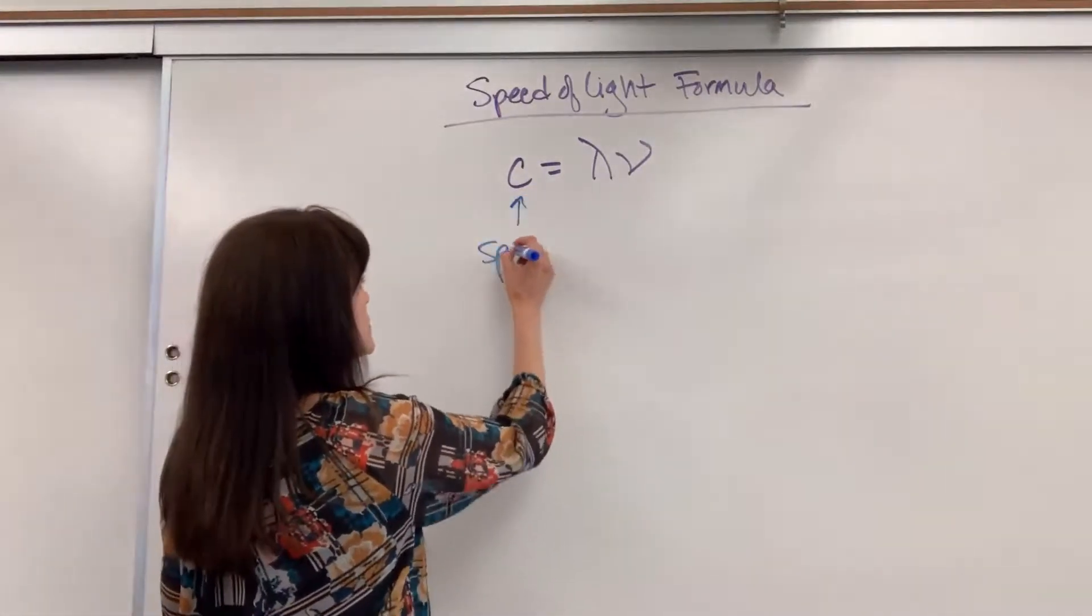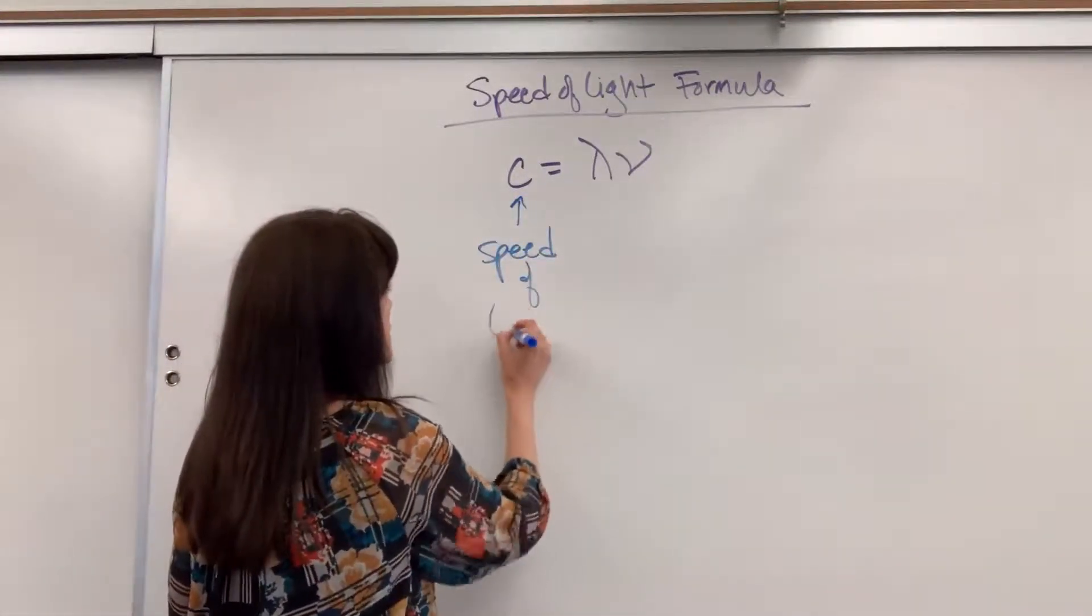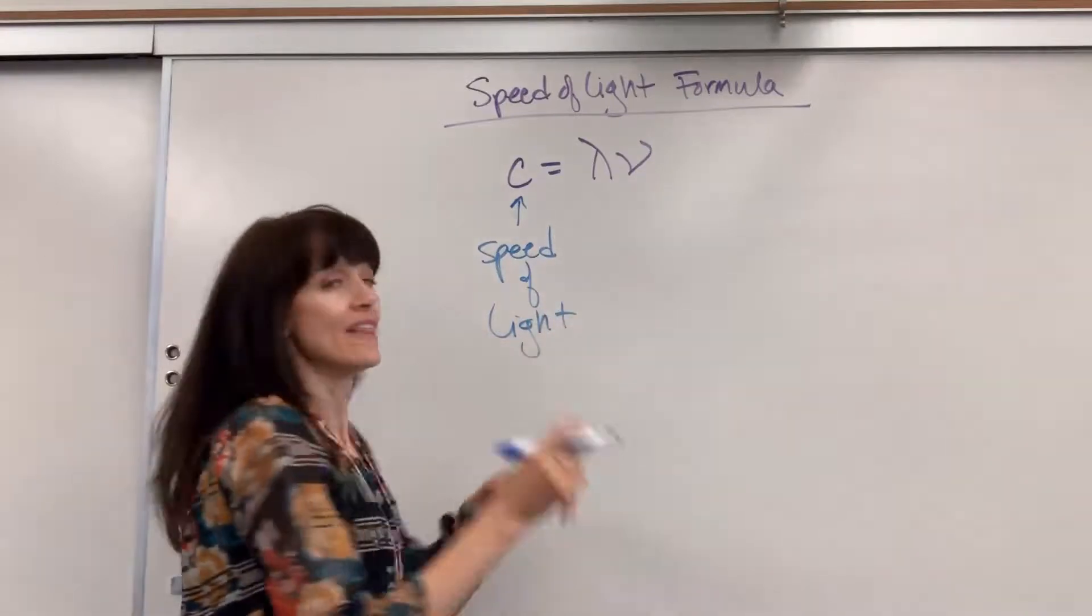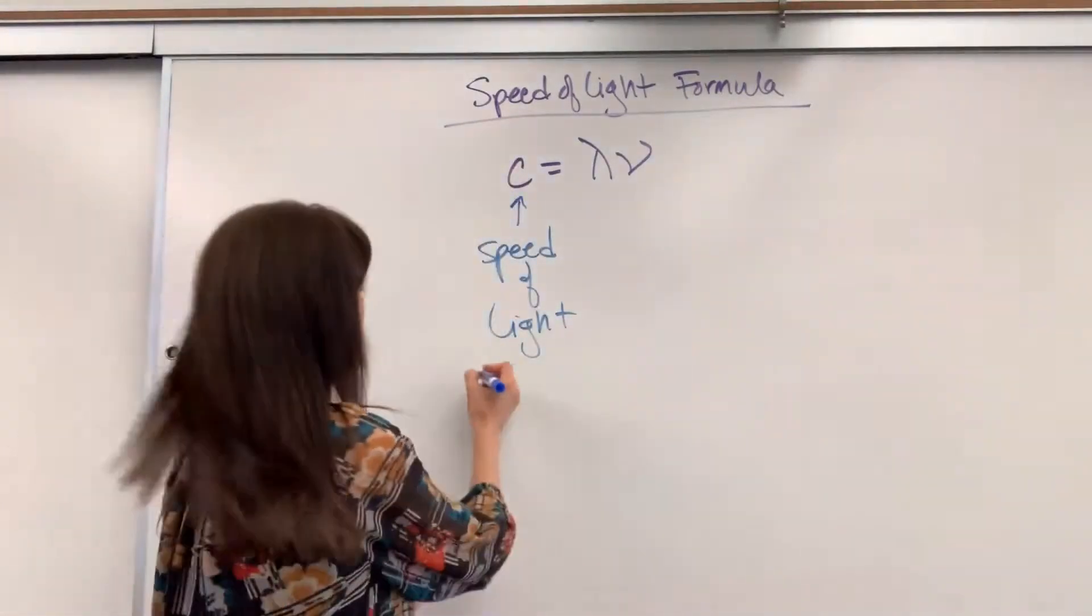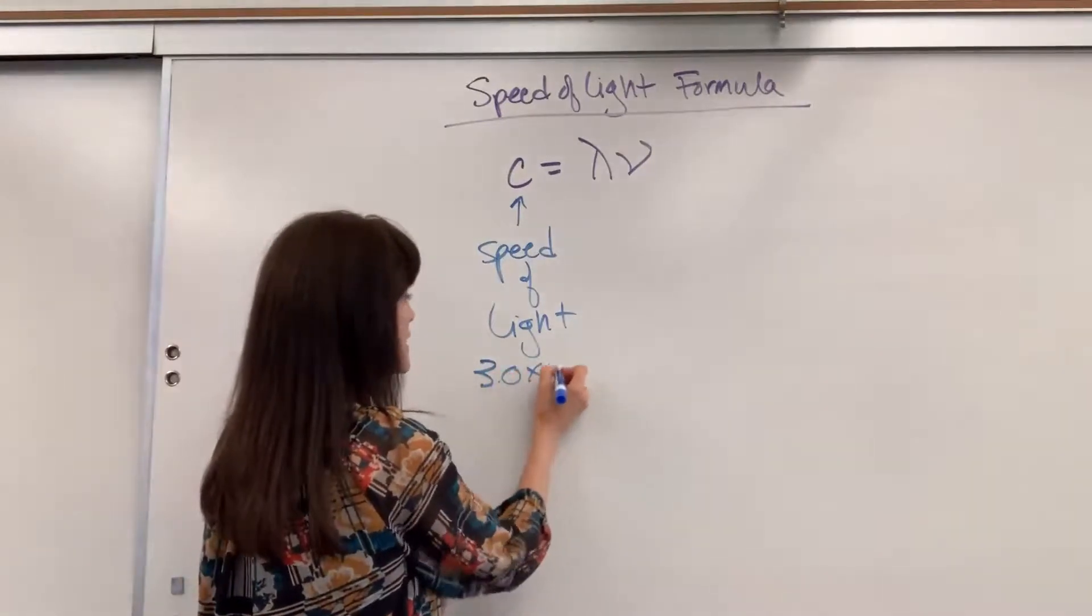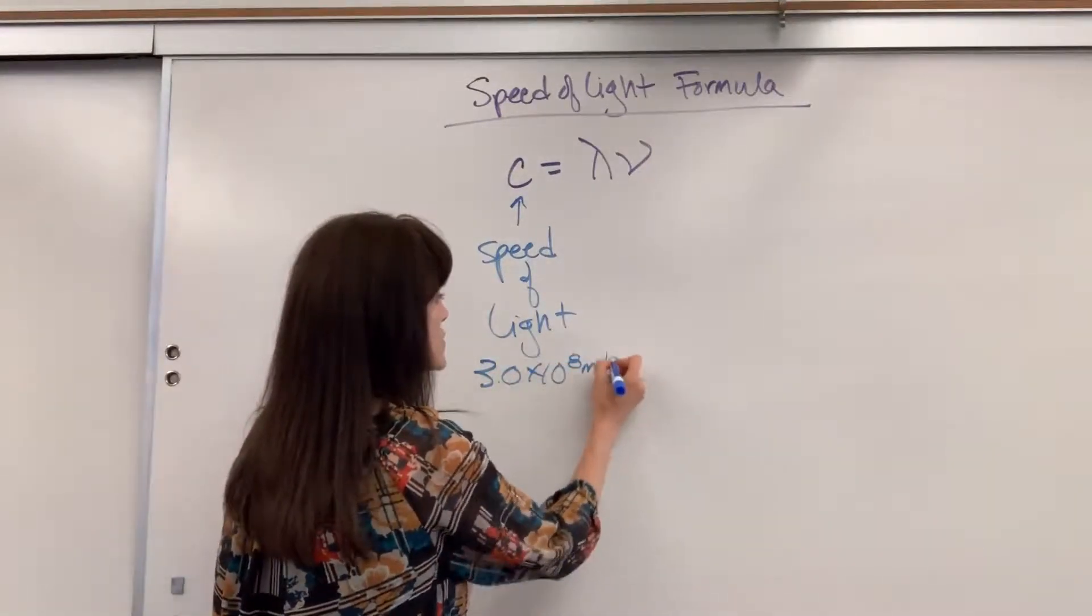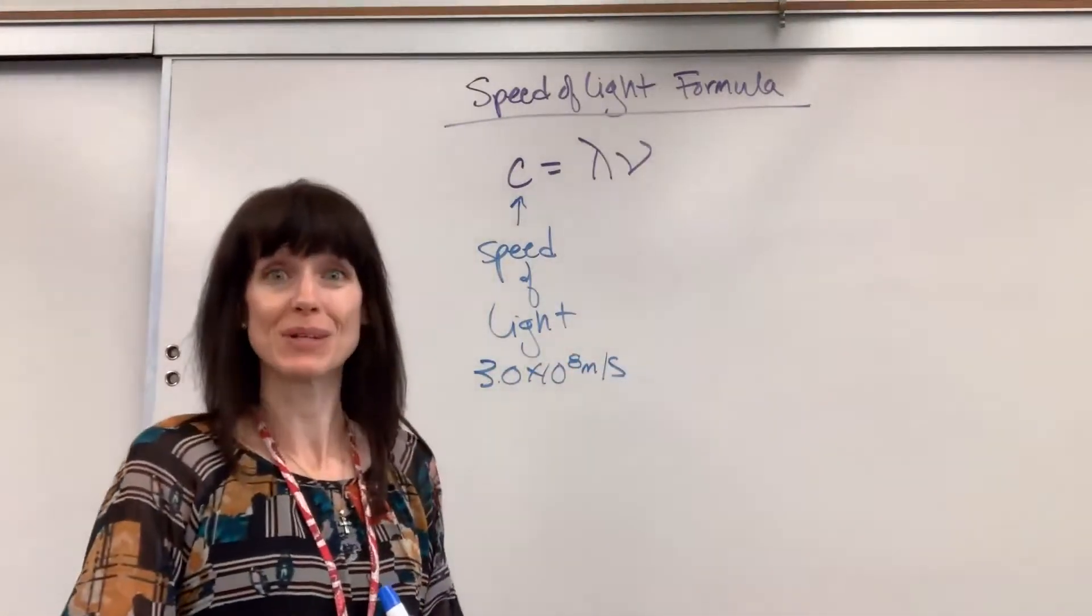C, of course, is going to be your speed of light. And that is constant. The speed of light is not going to change. We will have 3.0 times 10 to the 8 meters per second. Super important, those meters per second.